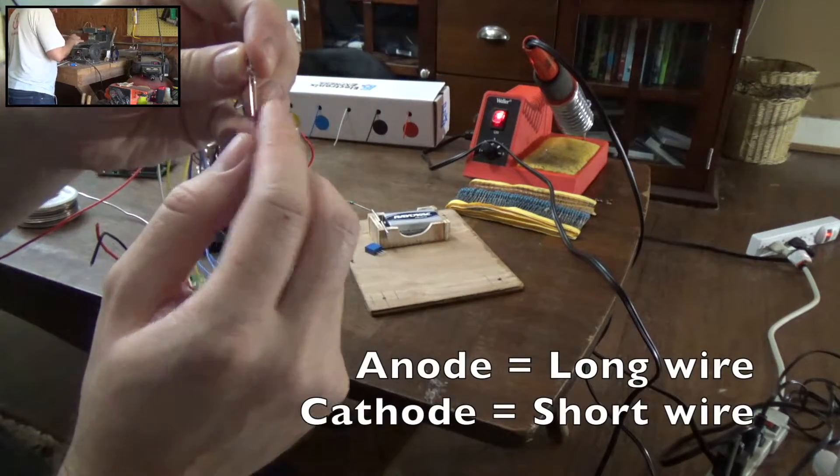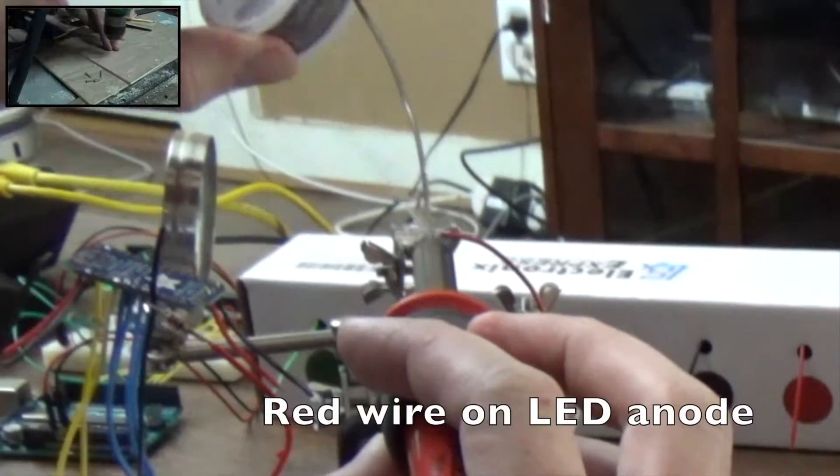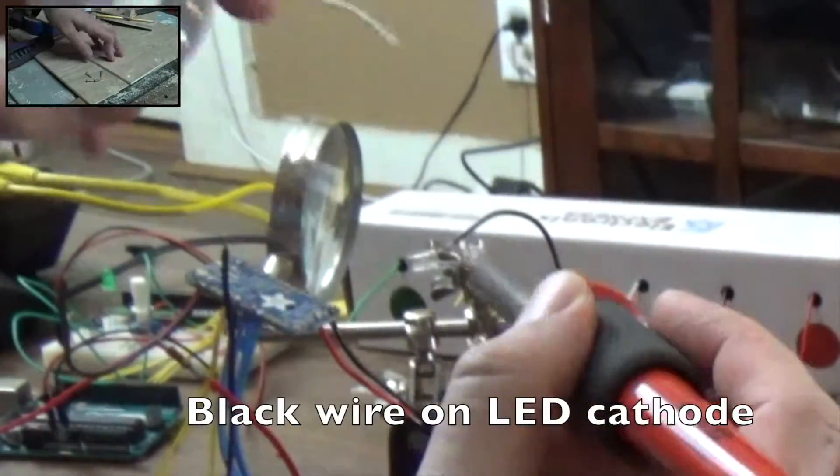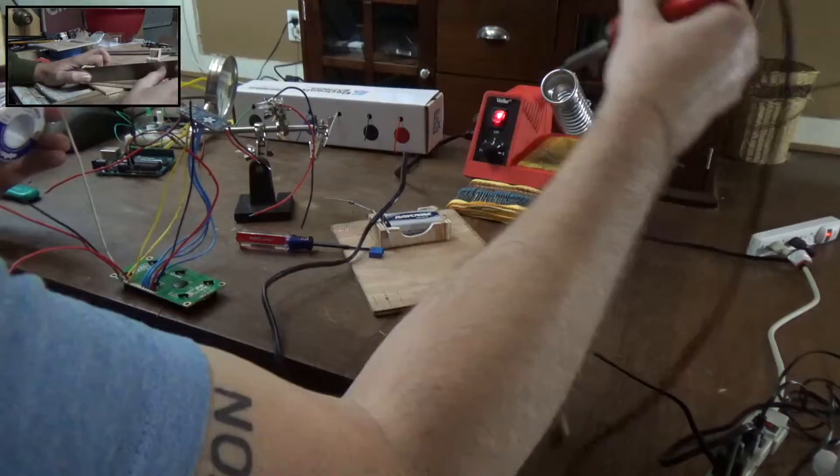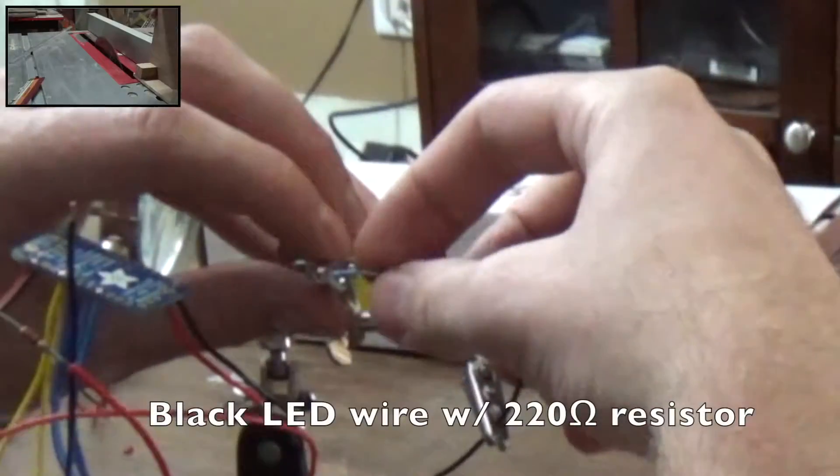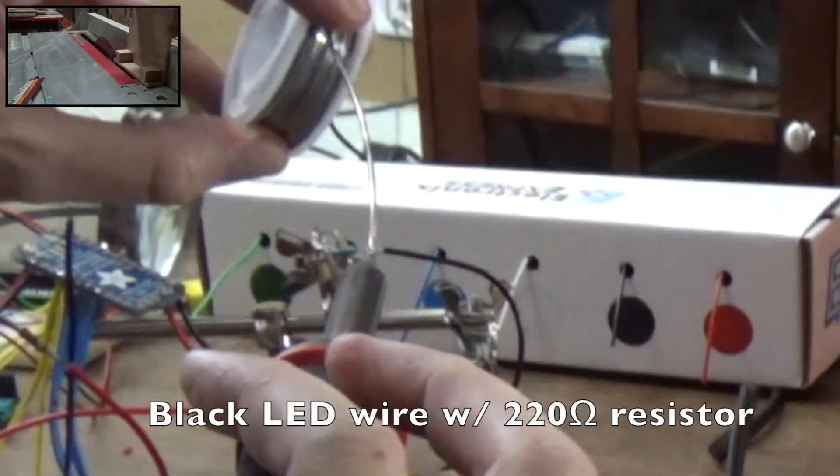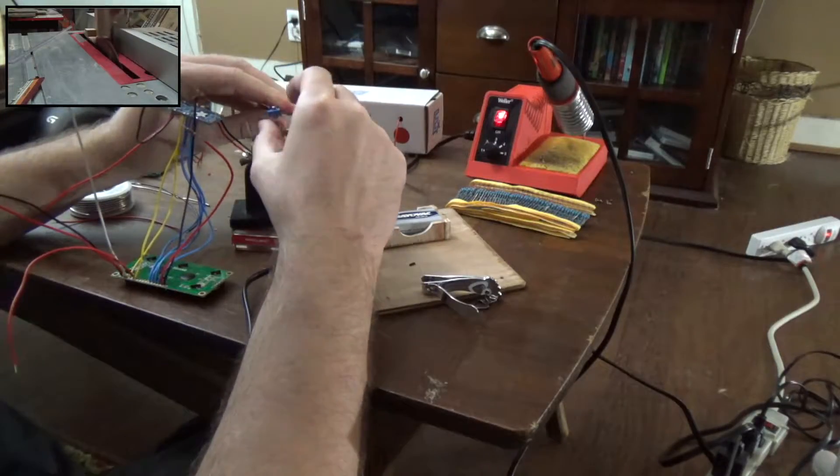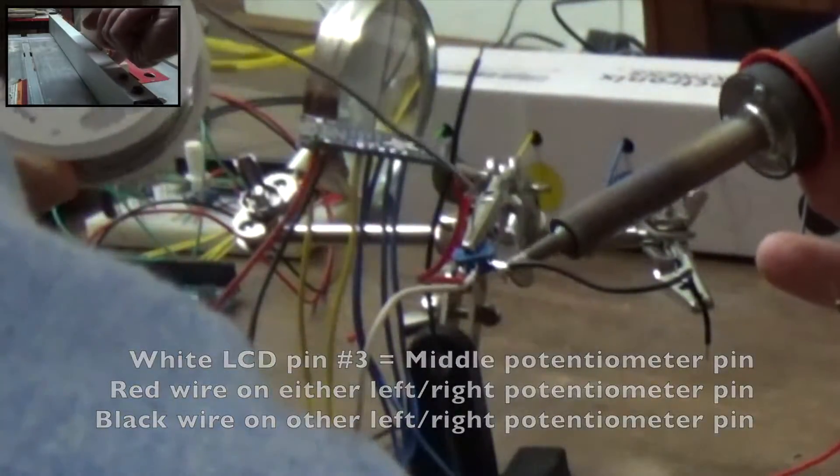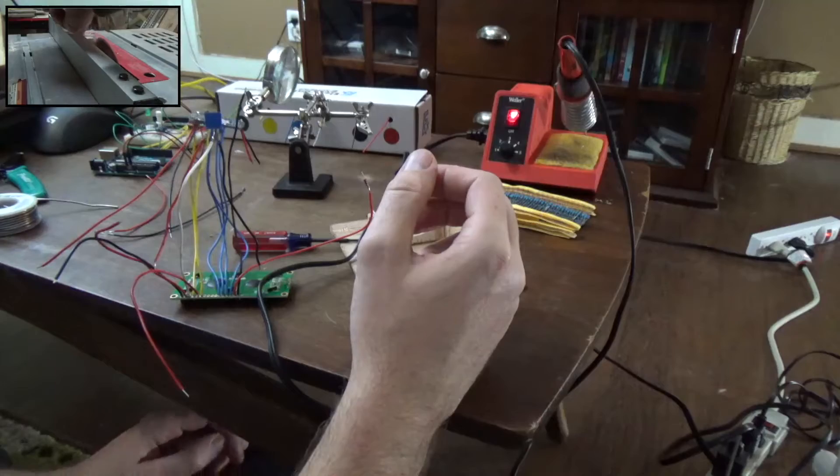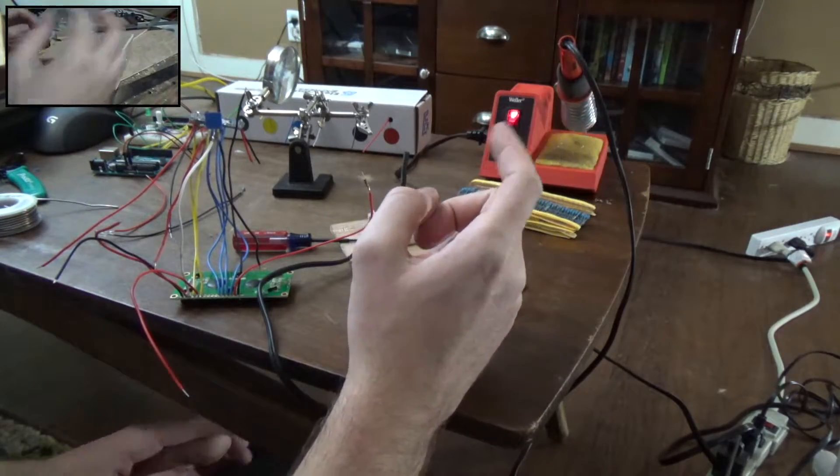Now let's wire up the LED. The anode is positive, the cathode is negative. Red wire on the LED anode and black wire on the LED cathode. The black LED wire gets a 220 ohm resistor as well. The white wire from the LCD goes to the middle pin on the potentiometer and a red and black on either side.